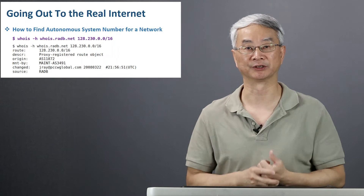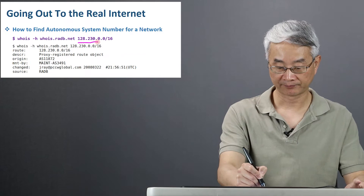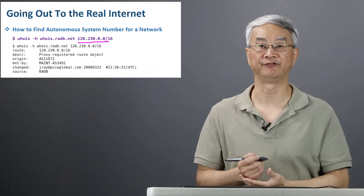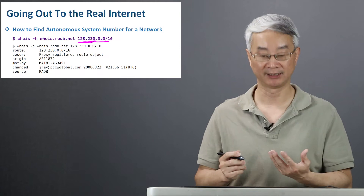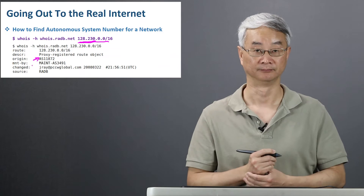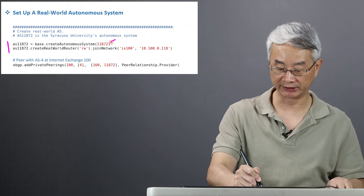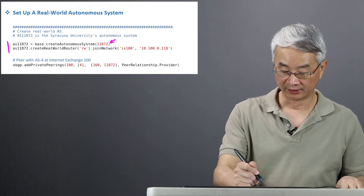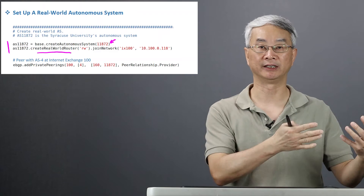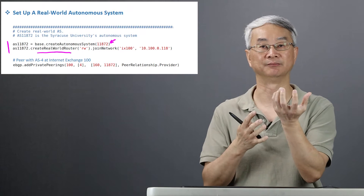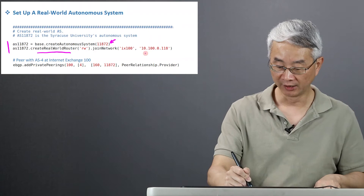So we're going to first find out the autonomous system number for a particular IP prefix. We know the Syracuse University's IP is 128.230.16. You can use this command to find out the autonomous system number, which is 11872. Once I know that, I will just create an autonomous system. I'm creating autonomous system 11872. I need to call this API, which will tell the emulator that this one is not going to be a real autonomous system — this one is going to be on behalf of the outside world. When we join, we're going to specify a particular IP address without using the default.